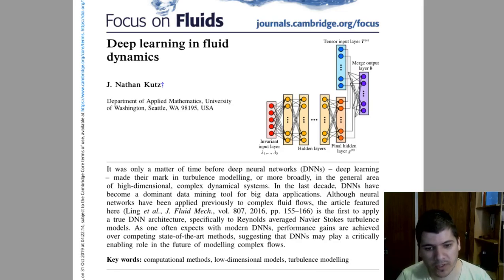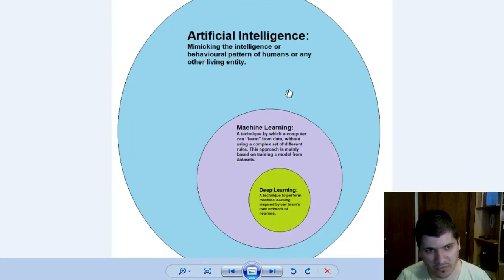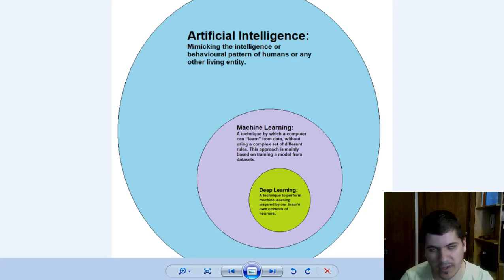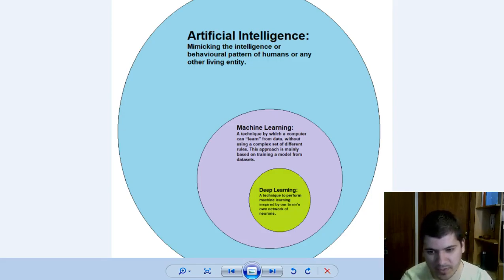In case you're not familiar with what deep learning is: here we have the branch of artificial intelligence, and inside artificial intelligence we have machine learning, and inside machine learning we have deep learning. Deep learning is basically a computer algorithm based on the architecture of a living cell or human neuron.